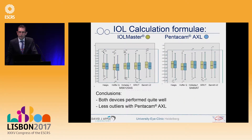Looking at the IOL calculation formulas — the four formulas shown here with the brown column for IOL Master and the blue column for Pentacam: Haigis, Hoffer Q, Holladay 1, and SRKT — these are optimized for constants, while Barrett U2 is not yet optimized. For both the aspheric lens and the SA60 lens, you can see the homogeneity of measurements from both devices. The Pentacam has slightly fewer outliers compared to the IOL Master, but the values are nearly equivalent across both devices.